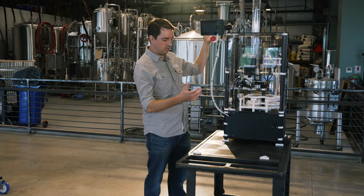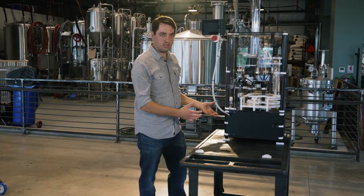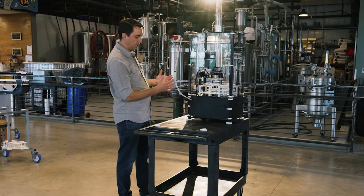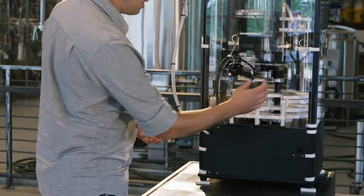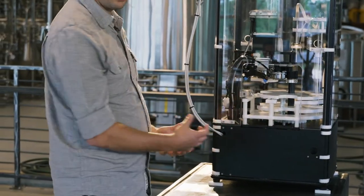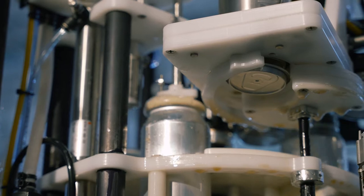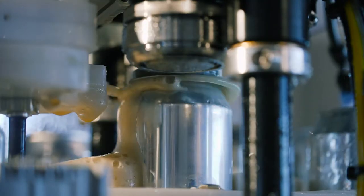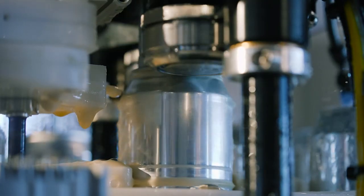This is the countertop filler in its basic configuration. This is just the machine, can be run fully automatically in this configuration, but it requires an operator feeding cans and taking cans out. You've got about seven to ten seconds to put a new can into the machine without slowing the machine down at all.